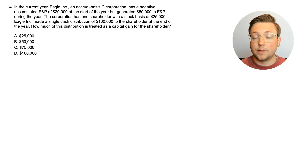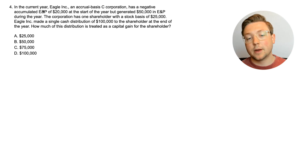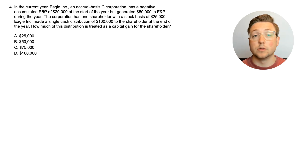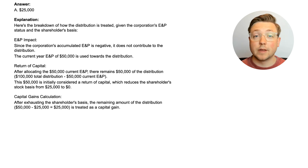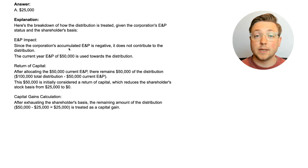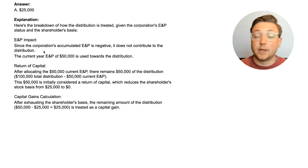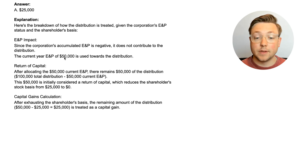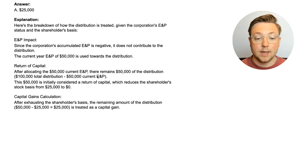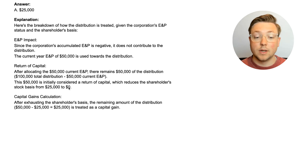The thing that could be confusing here is the negative accumulated E&P. The answer is $25,000 will be a capital gain for this shareholder. Since the corporation's accumulated E&P is negative, it doesn't affect the distribution at all — you don't pull from negative E&P to make it more negative; the accumulated E&P simply doesn't affect the distribution. But there is current year E&P of $50,000, which can be used toward the distribution. So we use $50,000 out of the $100,000, leaving $50,000 still to account for. The shareholder's stock basis is $25,000, so we reduce their basis from $25,000 to zero — that is a return of capital.